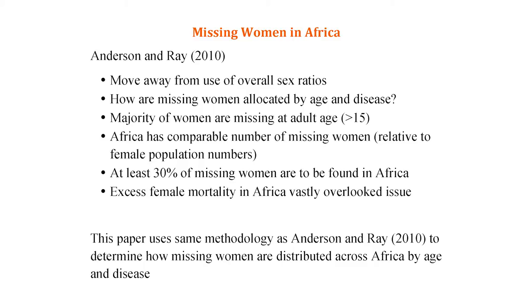We went further and asked what diseases are causing this. By changing the methodology a little bit from what Sen had used — though it's very much in the spirit of his work — we found that in fact the majority are older than 15 years old. So it's not that sex ratio at birth is unbiased; there is sex-selective abortion going on, but it's not explaining the 200 million missing women.